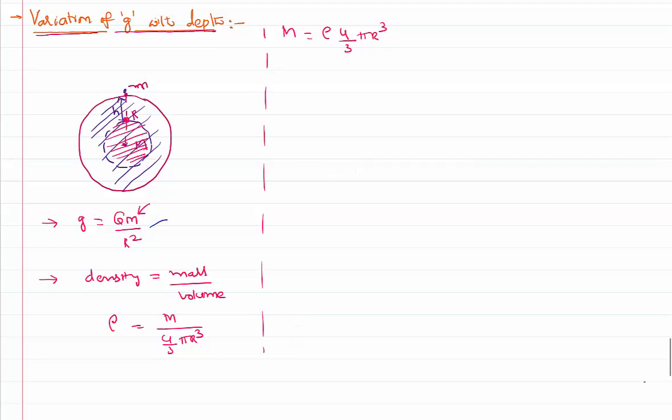Using this relation, in this case, acceleration due to gravity is g, in the place of capital M, rho 4 by 3 pi r cube by r square. So this r square and r square can be cancelled. So the remaining relation is g equal to 4 by 3 pi G rho and r. This is the equation that I need to use when we are going into the earth to a certain depth.